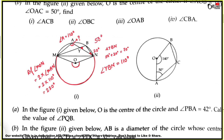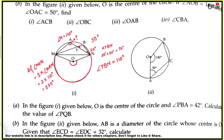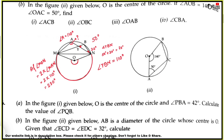Problem 5, number 2: O is the center. Angle AOB equals 140 degrees. Angle OAC equals 50 degrees. First, find angle ACB. The reflex angle AOB equals 360 minus 140, which equals 220 degrees.